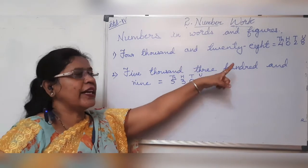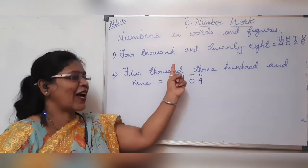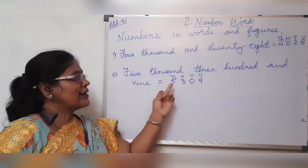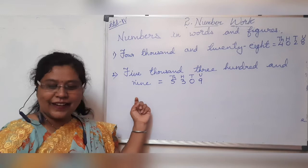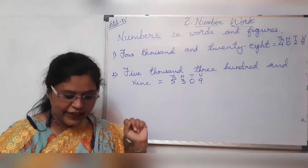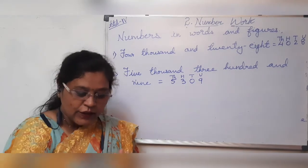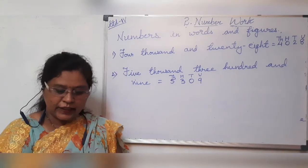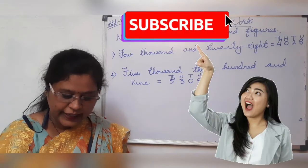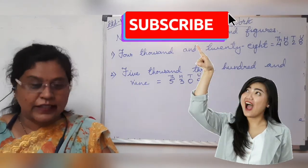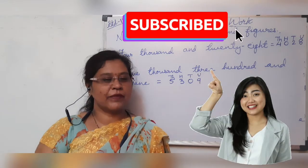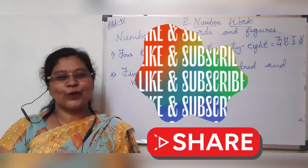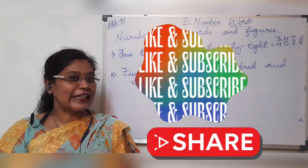We will read the number once again: 4,028 — four thousand and twenty-eight. I have completed the sums on page number 8. The exercises remain, and I will be completing them in the next video. I request all of you once again to please do like, share, subscribe, and hit the like button.